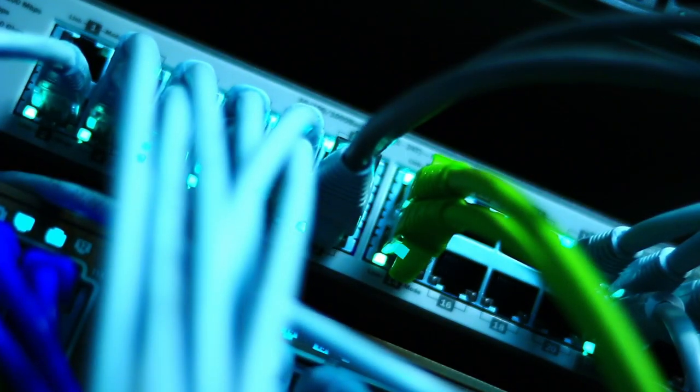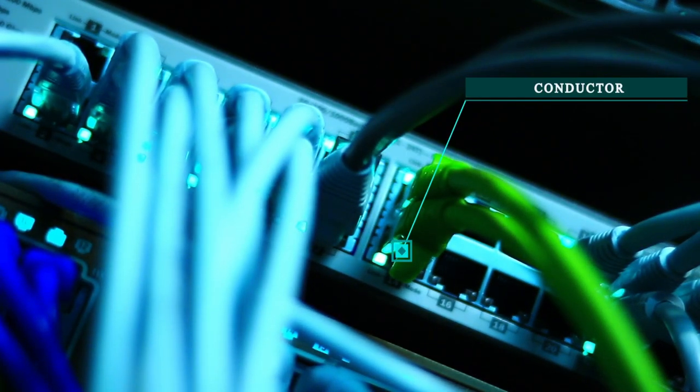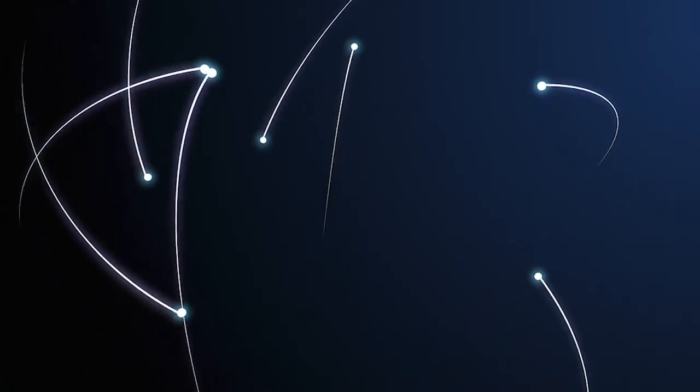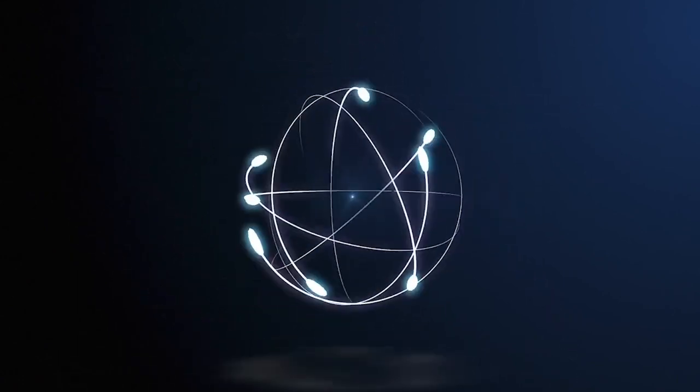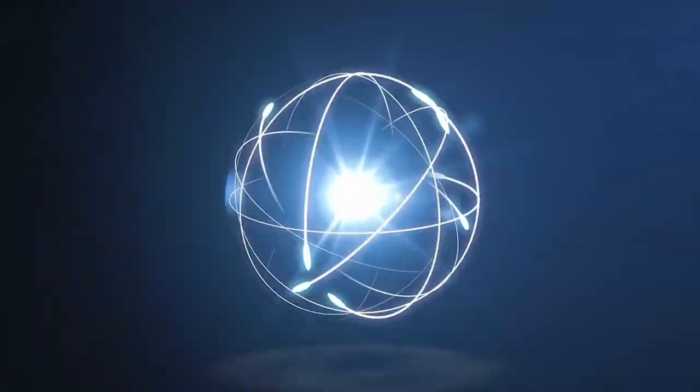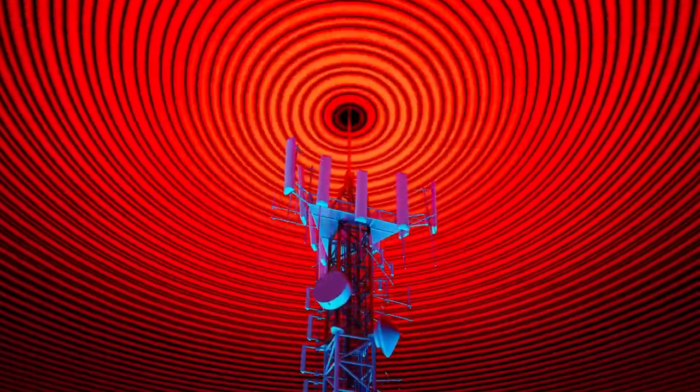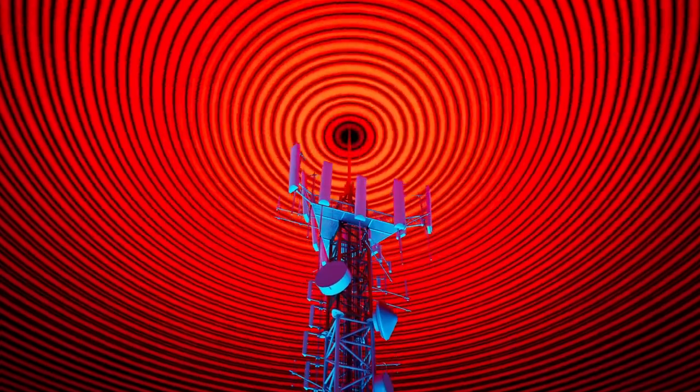The transmitter contains a long, thin conductor connected to an AC power supply. The electrons start oscillating when AC current flows. Oscillation involves the acceleration and deceleration of electric charges. Accelerating charges produce electromagnetic waves, which propagate in all directions.